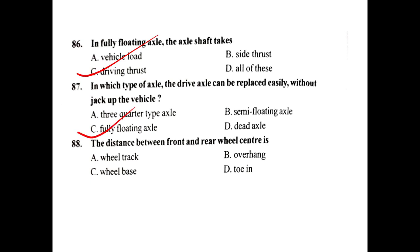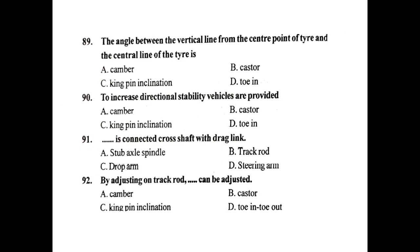The distance between front and rear wheel centers is the wheelbase. The angle between the vertical line from the center point of the tire and the center line of the tire is called camber. To increase directional stability, vehicles are provided with castor.